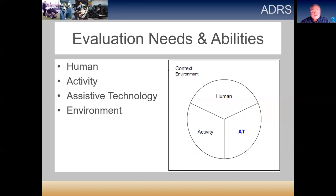The model we use for determining accommodations is commonly known as the HAT model for assistive technology services. We look at the human, the activity or task they need to perform, and the technology in place for that person. Those three things form a centralized model, and then we also evaluate the environment or context in which they need to operate. The human, activity, and technology together form the system.